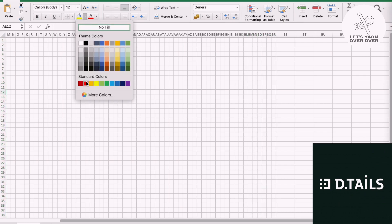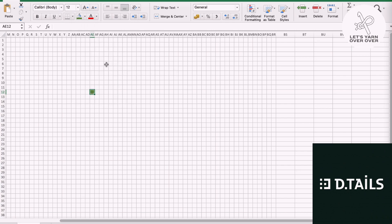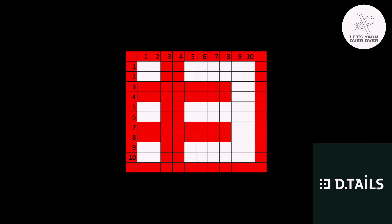After drafting out the logo, number the cells to find out how many rows and stitches it requires. The width of the logo is 10 stitches. I want the whole logo to be seen on one side, therefore I will take 10 multiplied by 4, which equals 40.